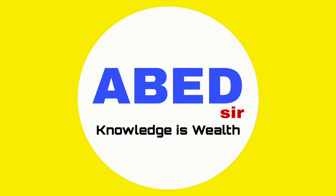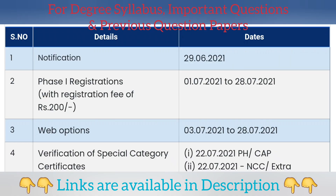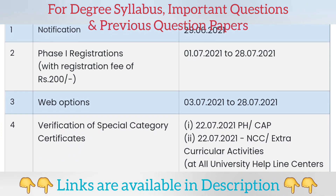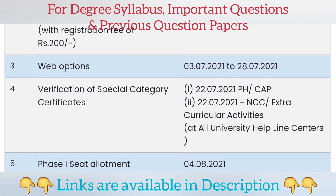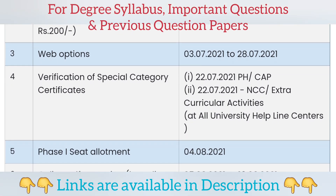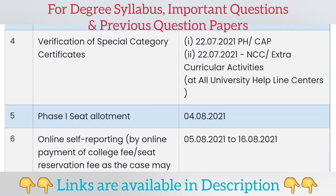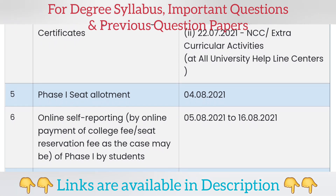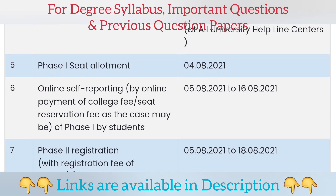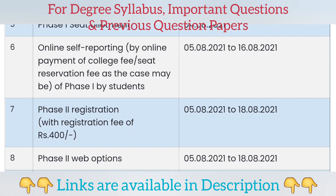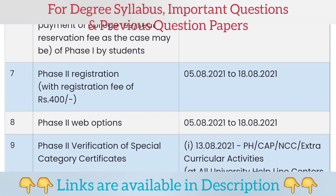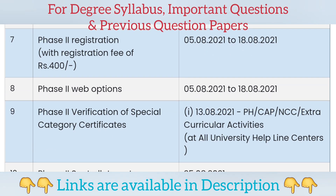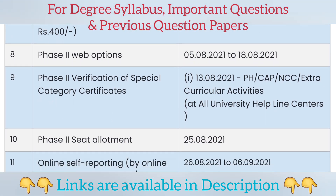Dear students, this video is related to degree online admissions, so please share this video with students who are taking admission in degree for the academic year 2021-22. Those who have already applied for degree admissions in Phase 1 and Phase 2 need to report to the college between 28th September 2021 to 4th October 2021.